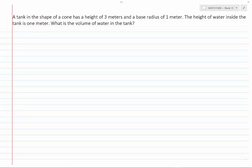A tank in the shape of a cone has a height of 3 meters and a base radius of 1 meter. The height of water inside the tank is 1 meter. What is the volume of water in the tank? Let's draw a sketch of the tank and show the information on the sketch. It is in the shape of a cone.